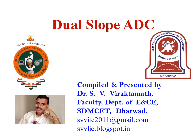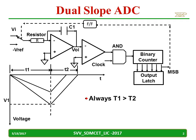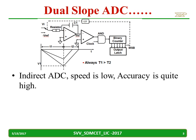In this video we will discuss the working of the dual slope A to D converter. This is a block diagram of the dual slope A to D converter, and it is called an indirect A to D converter because we are not comparing two voltages using any comparator, the way we did it for previous A to D converters.